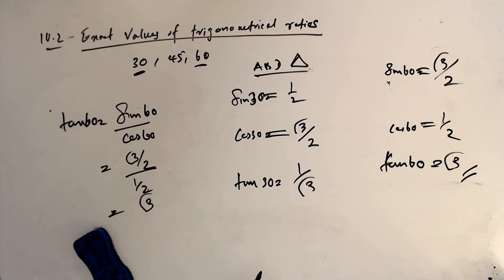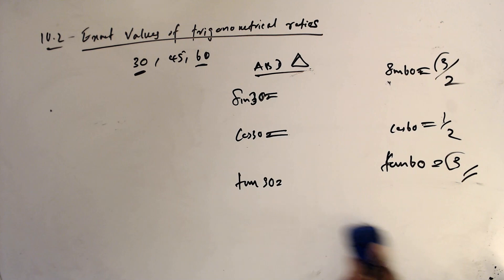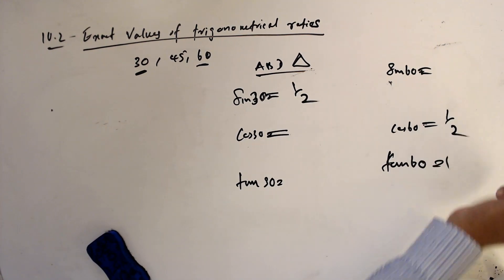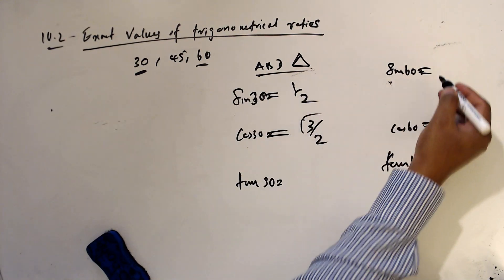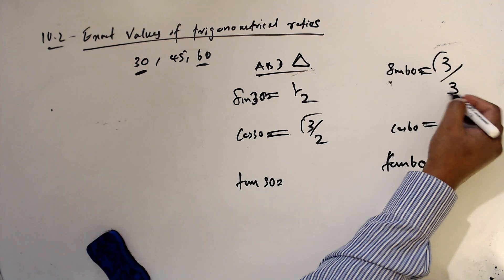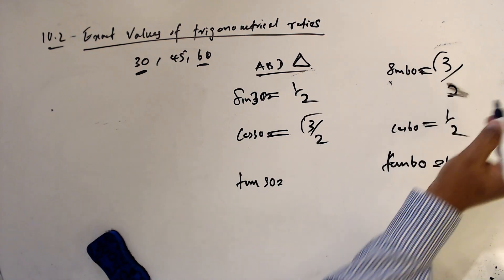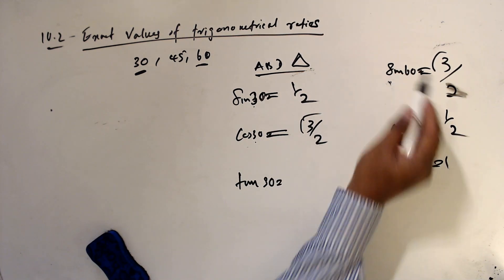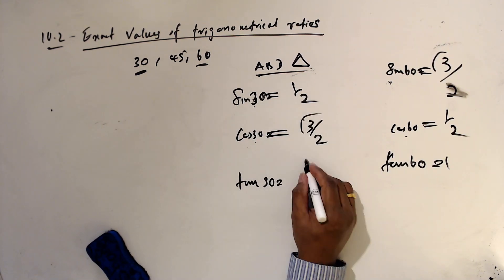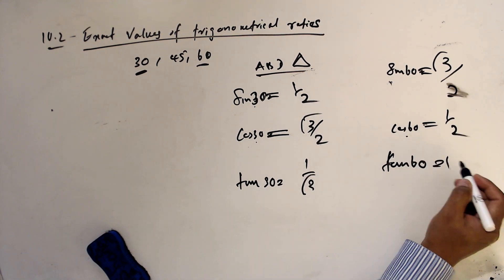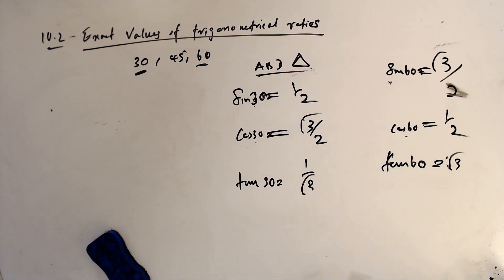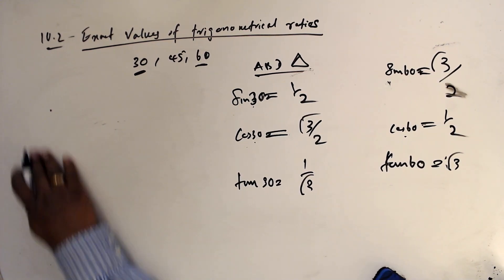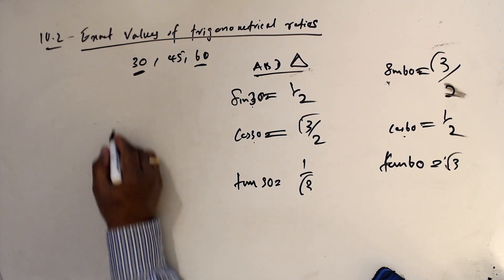So to summarize: sin 30° = 1/2, cos 60° = 1/2, cos 30° = √3/2, sin 60° = √3/2, tan 30° = 1/√3, and tan 60° = √3. Now let's go to find the values for 45°.